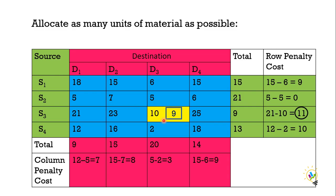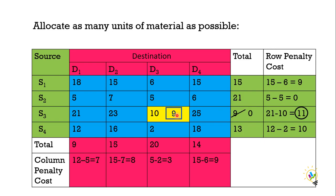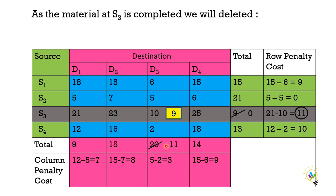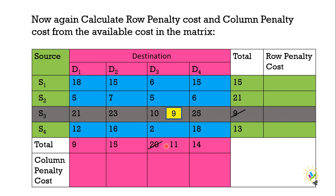Now source S3 is completed, so I am deleting it from the analysis — in further analysis, I will not consider row S3. Again, we calculate row penalty cost and column penalty cost. Vogel's Approximation Method three-step cycle will follow. First row: 15 minus 6 equals 9. Second row: 5 minus 5 equals 0. Fourth row: 12 minus 2 equals 10. For columns — 12 minus 5 equals 7; 15 minus 7 equals 8; 5 minus 2 equals 3; 15 minus 6 equals 9.